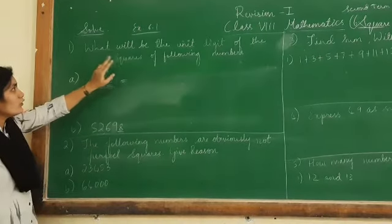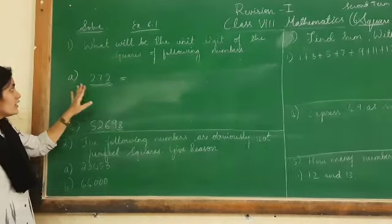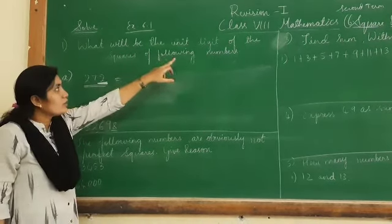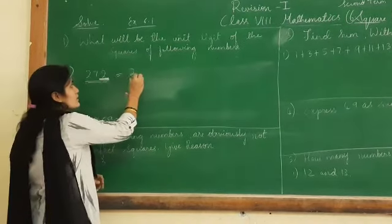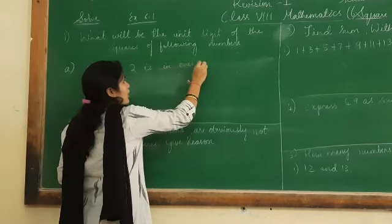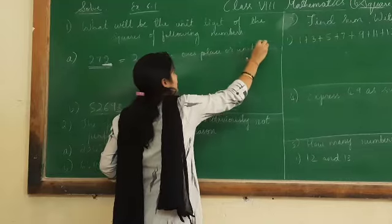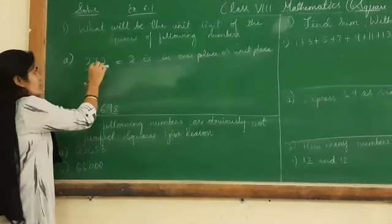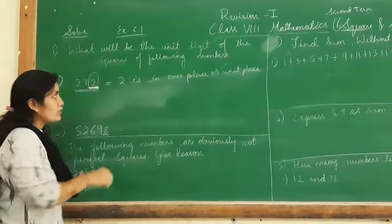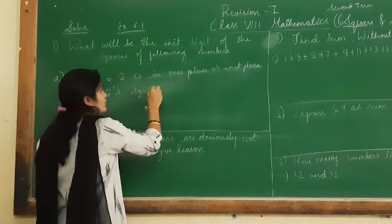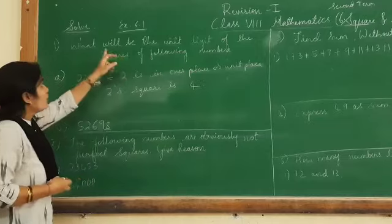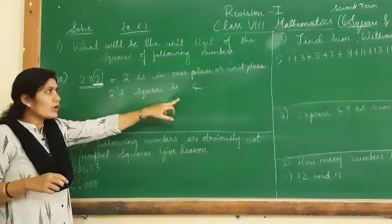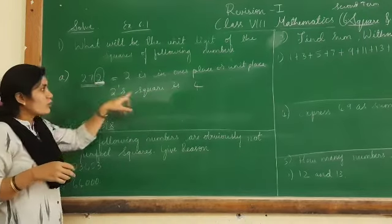Exercise 6.1, the first bit is: what will be the unit digit of the squares of the following numbers? The number given is 272. Here, 2 is in the unit place, that is 1's place. So, 2's square is 4. That means, if you take 272 squared, it ends with 4. Because 2 is in 1's place, and any number that ends with 2, its square ends with 4.